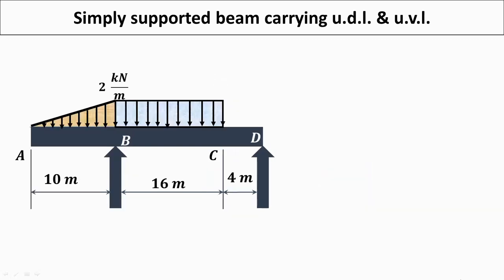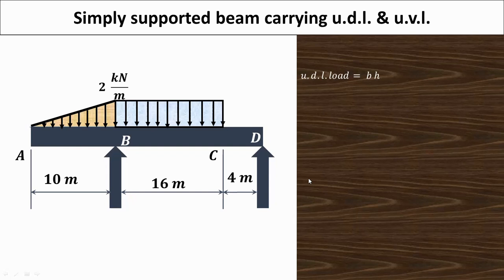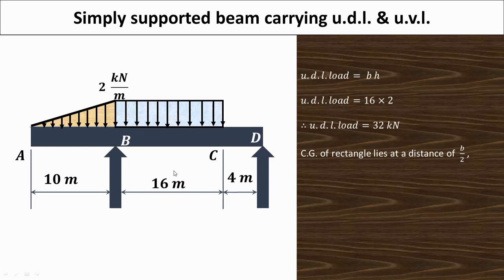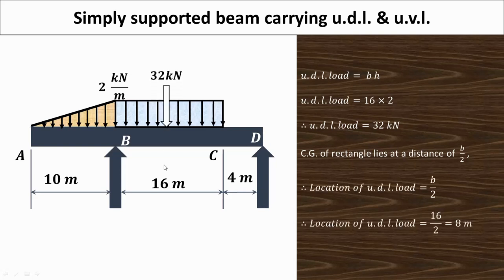The first step is to convert the uniformly distributed load and uniformly varying loads into point loads. For the uniformly distributed load, this is a rectangular distribution, so the UDL load equals base times height, which is the area of the rectangle. Base is 16 and height is 2, so it is 16 × 2 = 32 kN. The centroid of a rectangle lies at b/2, so at 8 meter from the start. We have converted the UDL of 2 kN per meter into a point load of 32 kN acting at 8 meter.